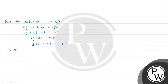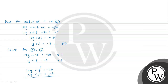Now we solve equation 5 and equation 6 together. Equation 5 is 14g + 2f = -30, or 7g + f = -15. Equation 6 is g + f = -3. Since f is the same, we multiply equation 6 by 2 to get 2g + 2f = -6, then subtract from equation 5: 12g = -24, so g = -2. Substituting into equation 6: -2 + f = -3, so f = -1.